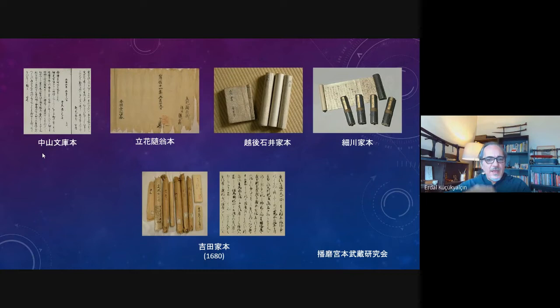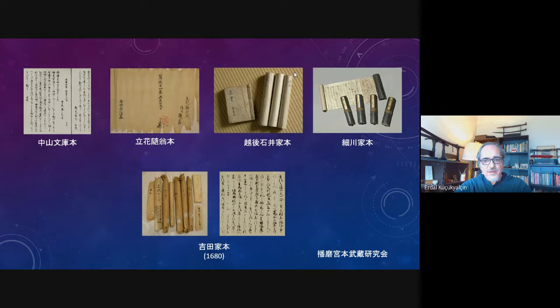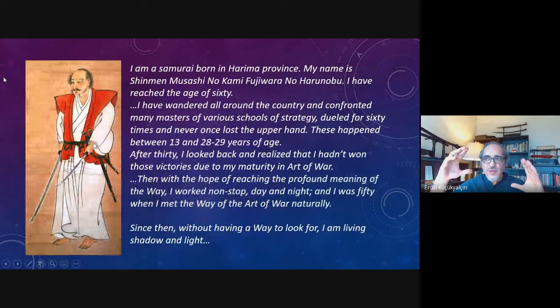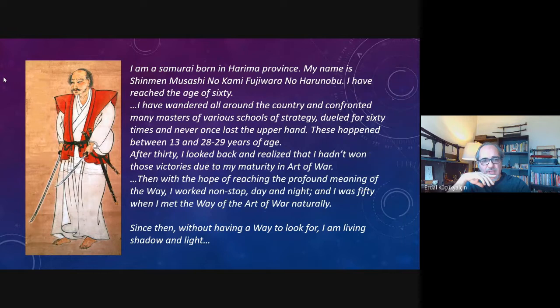The first task was to find the right text. The original manuscript is not surviving, but there are quite trustworthy early copies. I chose the authoritative text accepted by many specialists — recomposed by researchers at the Harima Miyamoto Musashi Kenkyukai, the research society on Musashi's writings. Musashi begins his text with a self-introduction: 'I am a samurai born in Harima province.' He regards what he had lived and experienced until his thirties as mere coincidence.